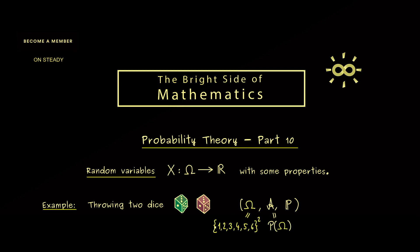So the sample space Ω is the Cartesian product of {1,2,3,4,5,6} with itself. The sigma algebra A is just the power set. And then, without writing down the explicit definition, we can simply say P is given by the uniform distribution. So you see, with this probability space we have the whole information of this random experiment.